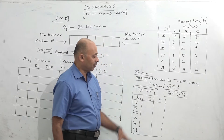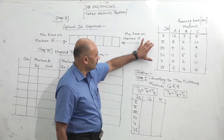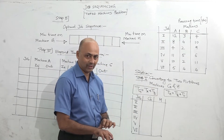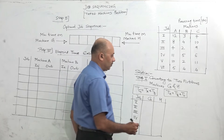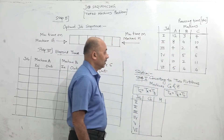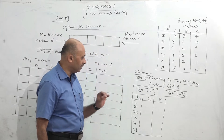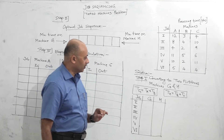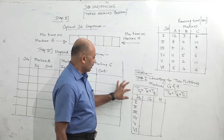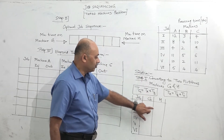The first step of the solution is to convert this 3-machine problem temporarily into a 2-machines or 2-fictitious machines problem. These are imaginary machines G and H. These are the formulae for doing the conversion — we will calculate the processing time for G and H.